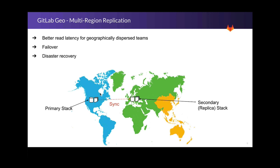Now that you understand the basics of setting up an HA environment, the last component for creating a robust GitLab instance is to utilize the GeoReplication service. Geo allows you to have multiple secondary GitLab instances geographically located close to your distributed team for faster read times. In addition to performance, it provides a convenient failover in the event that the primary instance goes down, and since it's a synced replica from the primary, it also acts as a backup for disaster recovery.